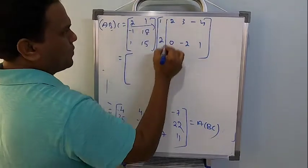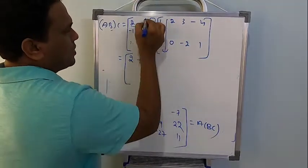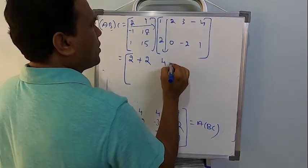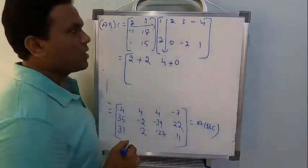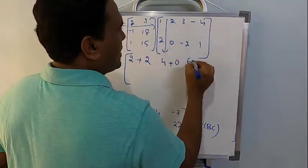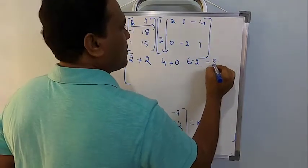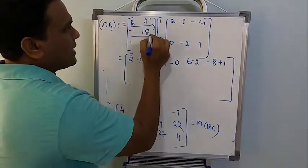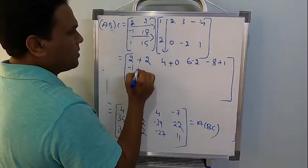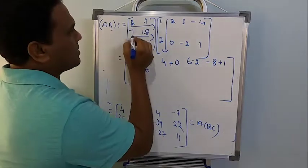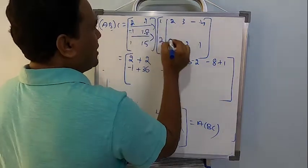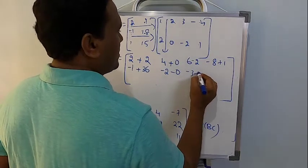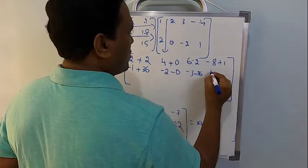So first row, first column: 2 multiplied by 1 is 2, plus 2 multiplied by 1 multiplied by 2 will be 2. First row, second column: 2 multiplied by 2 is 4, plus 1 multiplied by 0 is 0. The next: 2 multiplied by 3 is 6, 1 multiplied by minus 2 will be minus 2, 2 multiplied by minus 4 is minus 8, 1 multiplied by 1 is 1. Second row, first column: minus 1 multiplied by 1 is minus 1, plus it is going to be 36. The next: minus 1 multiplied by 2 is minus 2, and 18 multiplied by 0 is 0. Next: minus 3, and minus 36. The next is going to be plus 4, plus 80.